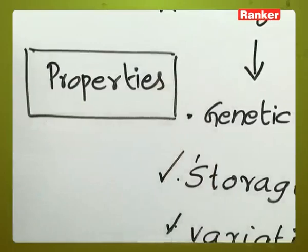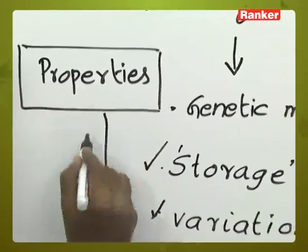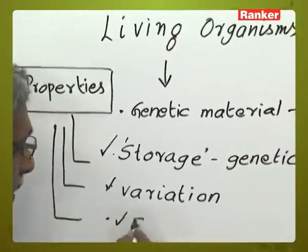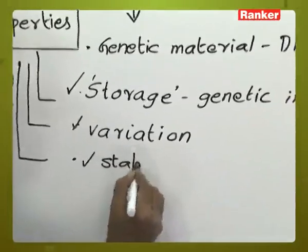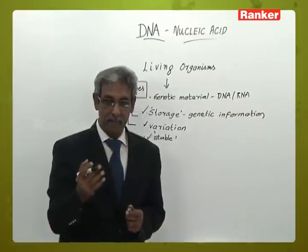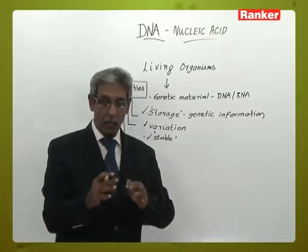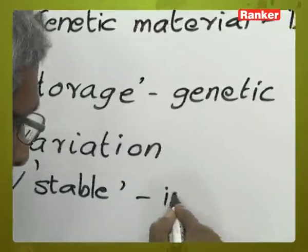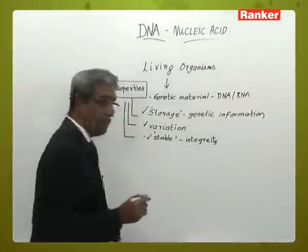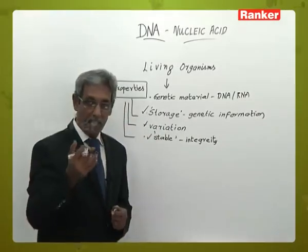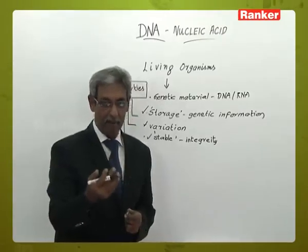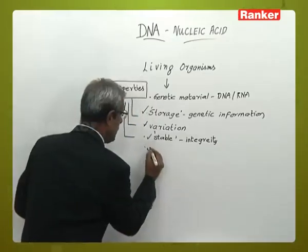The basic properties of the genetic material are: first, storage; second, it shows variation; and third, the genetic material is always stable. It is stable through generations, stable through time and space — it does not lose its integrity. The integrity of the genetic material is very important for expression of biochemical characters and physical attributes like phenotype. The fourth important feature is that it is able to replicate.